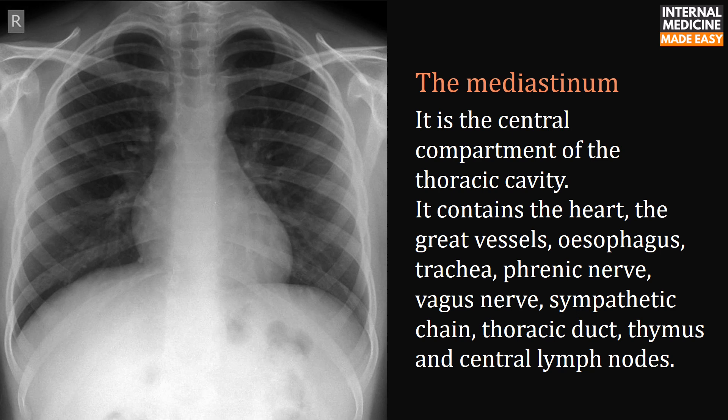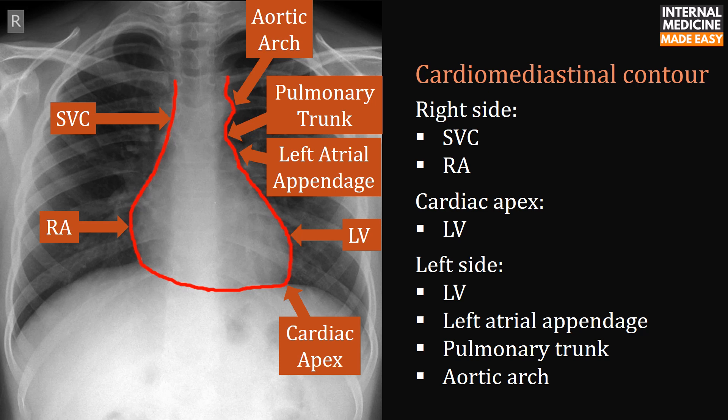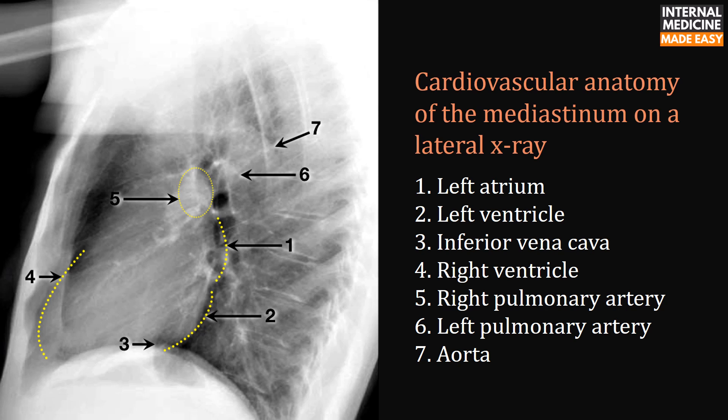The mediastinum is the central compartment of the thoracic cavity. It contains the heart, great vessels, esophagus, trachea, phrenic nerve, vagus nerve, sympathetic chain, thoracic duct, thymus, and central lymph nodes. The cardiomediastinal contour: on the right side there are the superior vena cava and right atrium; the cardiac apex consists of the left ventricle. On the left side there are left ventricle, left atrial appendage, pulmonary trunk, and aortic arch. On a lateral x-ray, important cardiovascular structures include left atrium, left ventricle, inferior vena cava, right ventricle, right and left pulmonary arteries, and aorta.